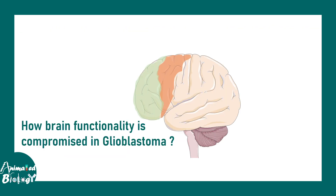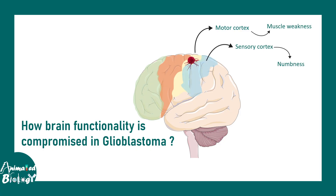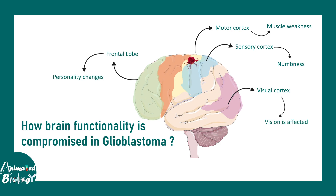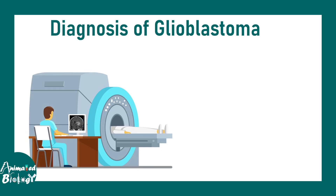This tumor can be situated in any brain location. For example, if it is in the motor cortex, motor activities are compromised and there could be muscle weakness. If it is in the sensory cortex, it would lead to numbness. If it is in the visual cortex, there could be vision-related impairments. If it is in the frontal lobe, it can even lead to a change in personality. So, depending upon the location of the glioblastoma, different brain functionalities could be compromised.